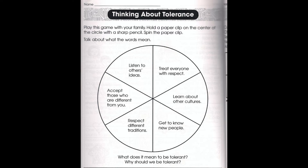So listening to that, I want you to do the spinning game. I would like you to do it at least twice per person — if you can do it more, that's great — but at least twice per person so you all can chat about it. And then if you could please grab a piece of paper, it could be a scrap piece of paper, and just talk about what does it mean to be tolerant — I want you to answer that question — and why should we be tolerant — I want you to answer that question as well.